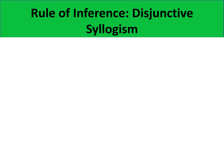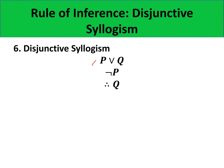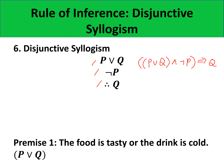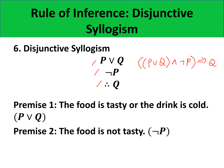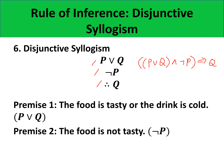The next rule of inference is disjunctive syllogism. Its form is P or Q for the first premise, negation of P for the second premise, and therefore Q as the conclusion. Since this is known to be valid, its propositional form — P or Q, and negation of P implies Q — must be a tautology. For example, premise one: the food is tasty or the drink is cold (P or Q). Premise two: the food is not tasty (negation of P). By disjunctive syllogism, our conclusion must be Q: the drink is cold.